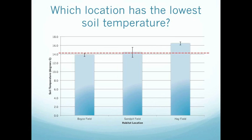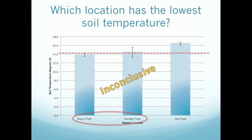Therefore, we cannot conclusively tell which of these locations has the lowest soil temperature. It's definitely between Boyce field and Sandpit field because, as we've already agreed, Hayfield has conclusively the highest soil temperature. But it is inconclusive which habitat has the lowest soil temperature. And that's all there is to it.